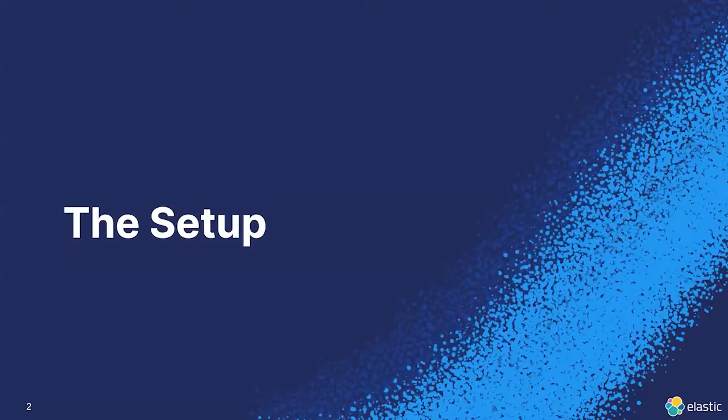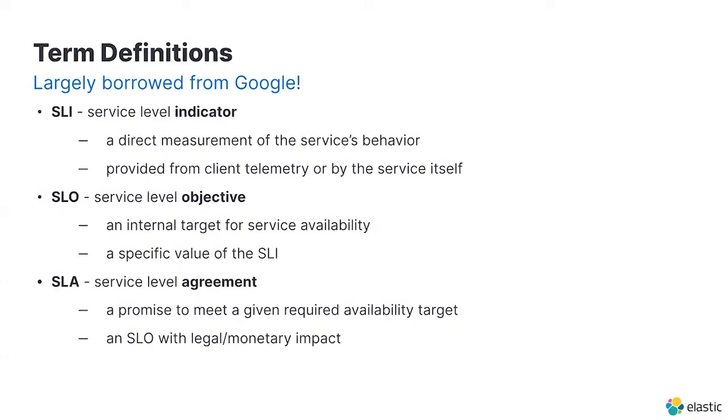Today we're going to cover how to measure, report, and alert on service level indicators and service level objectives using the Elastic Stack. Should you have any questions while I'm talking, please drop them in chat. Before we get into the nitty-gritty of the presentation, I'm going to do a brief overview of the terminology that I'll be using and the infrastructure that we are measuring so that we're all on the same page. Google created these terms some time ago and I mostly just borrowed their definitions. Google has several good books on this topic and other SRE topics that are available for free if you want more information.